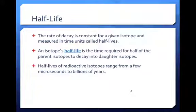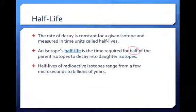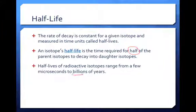What's interesting about this decay is that over long periods of time, it's actually a predictable rate at which this occurs. The rate of decay is constant for any isotope, and it's measured in time units called half-lives. An isotope's half-life is the time required for one half of the parent isotopes — the original isotopes — to decay into what we call daughter isotopes. Half-lives of radioactive isotopes range from a few microseconds to billions of years, and it's these larger ones that we really use for finding the age of rocks and the age of the earth.